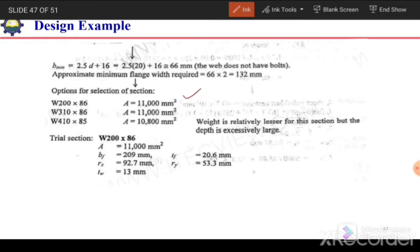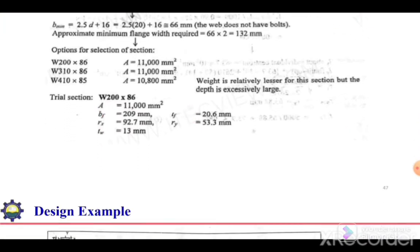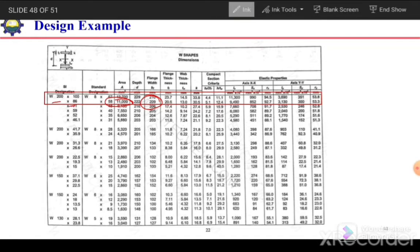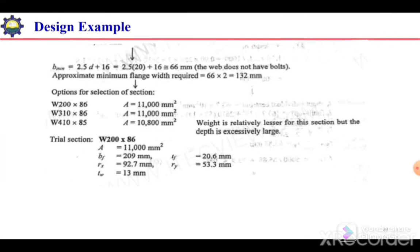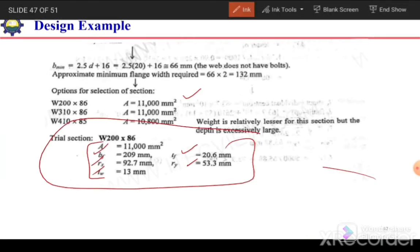Once we have the trial section, we note its properties from the table for W200×86: area, flange width BF, flange thickness TF, web thickness TW, moment of inertia I_x, radius of gyration R_x, and R_y. These values are recorded for the subsequent capacity checks.